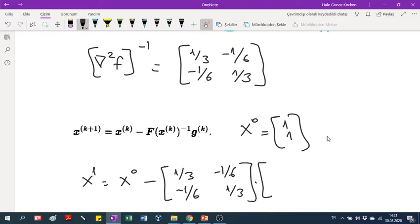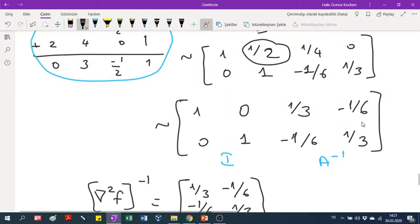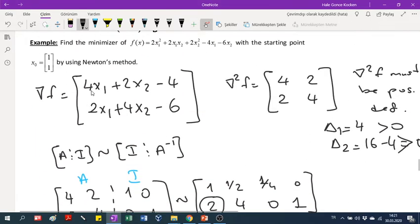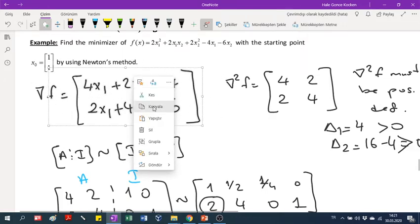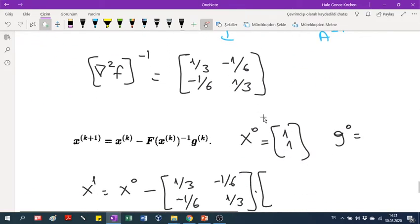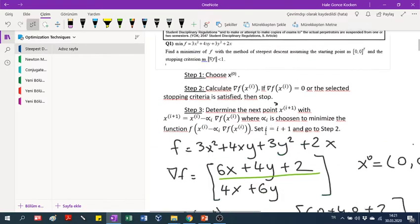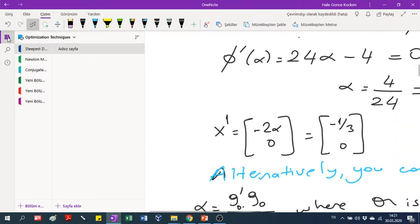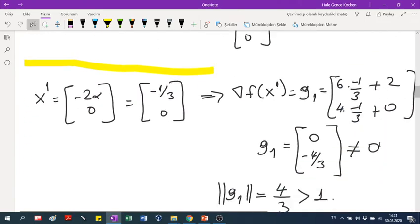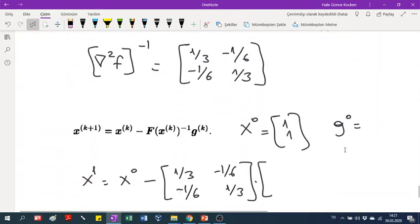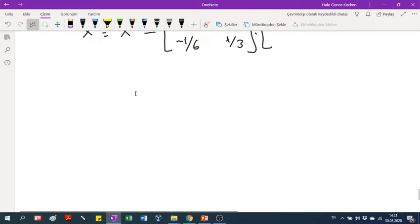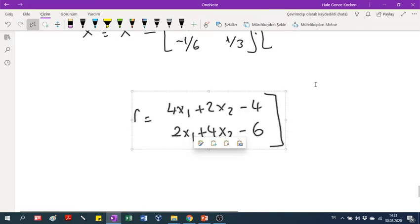What about our gradient? We didn't calculate our gradient. Let me write it for you. Our g0, where is our gradient, is 4x1. Let me copy it and use it here. Just wait for a while, I'm opening the note here. So this is the gradient.